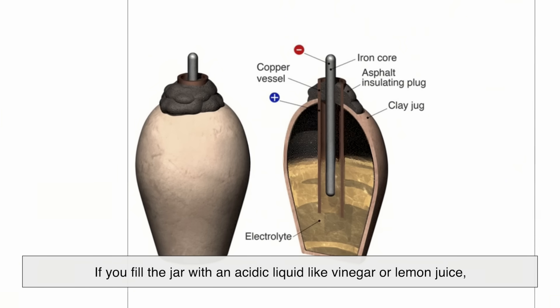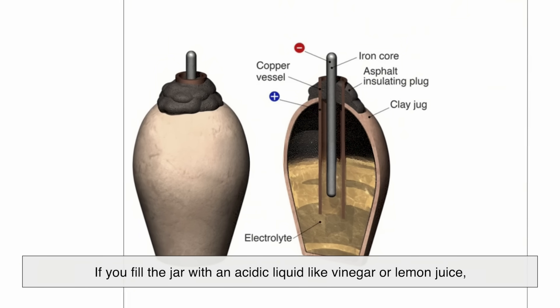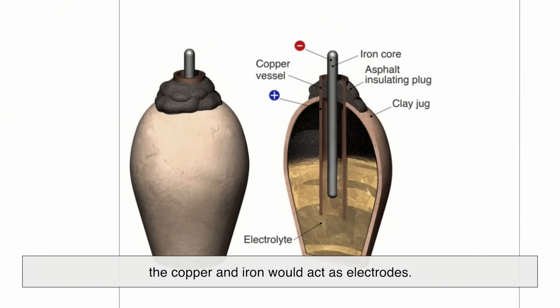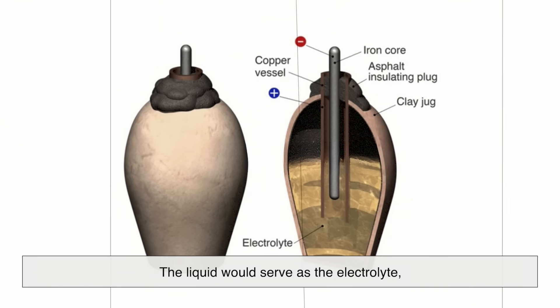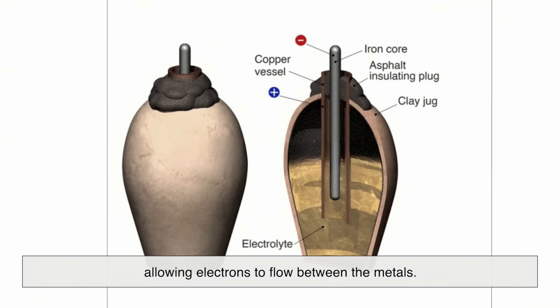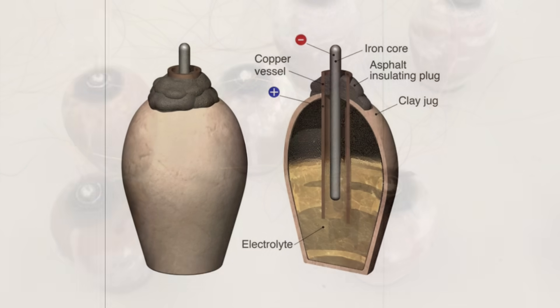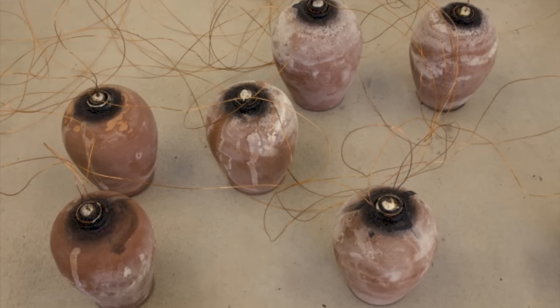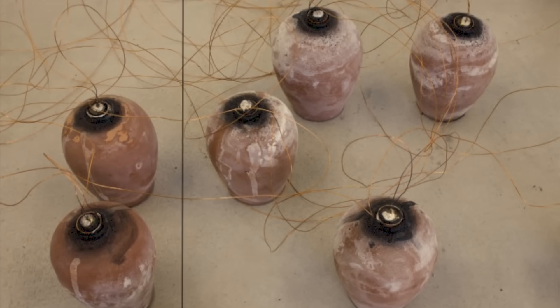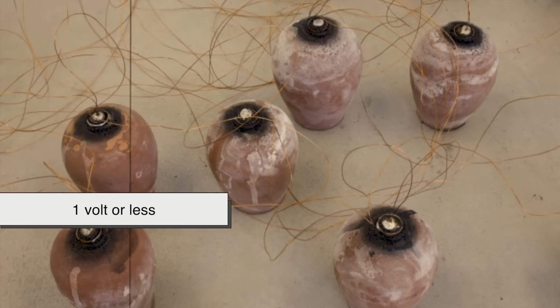if you fill the jar with an acidic liquid like vinegar or lemon juice, the copper and iron would act as electrodes. The liquid would serve as the electrolyte, allowing electrons to flow between the metals. Connect wires to each end, and you'd have a primitive battery capable of producing a small but measurable voltage, roughly one volt or less.